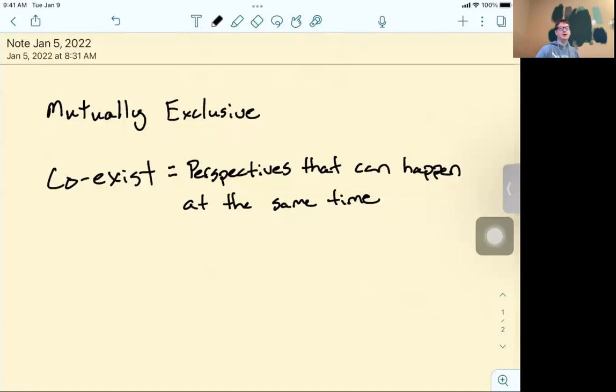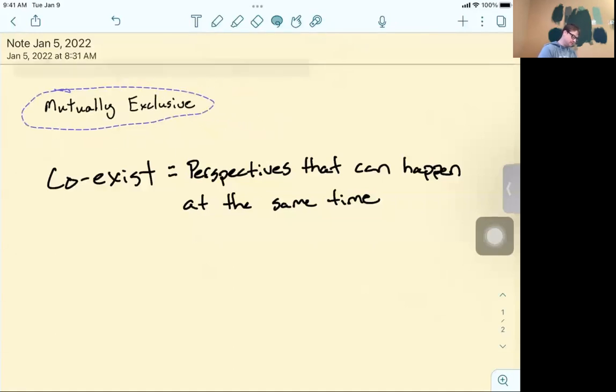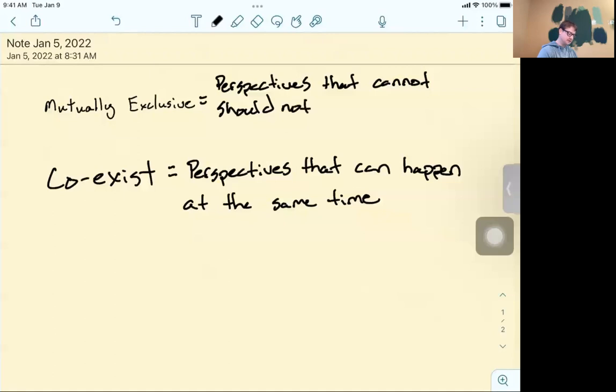So what we're talking about when we talk about mutually exclusive, we're looking at the opposite of coexist. So perspectives that cannot or should not happen at the same time. Before I get into some examples of this, I'd like you to write this down in your notebook.